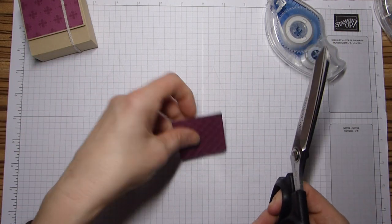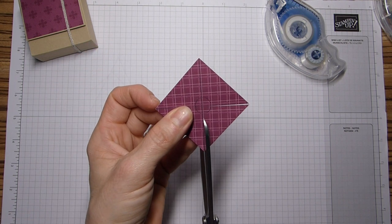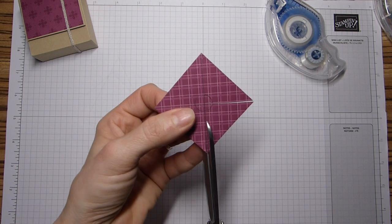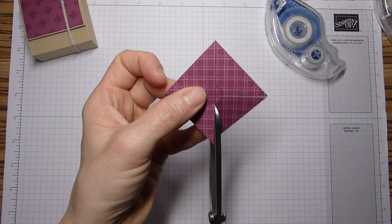Then with your scissors, you're going to cut down to the circle. So not all the way, obviously, otherwise you'd just cut it into triangles. All the way to that corner.